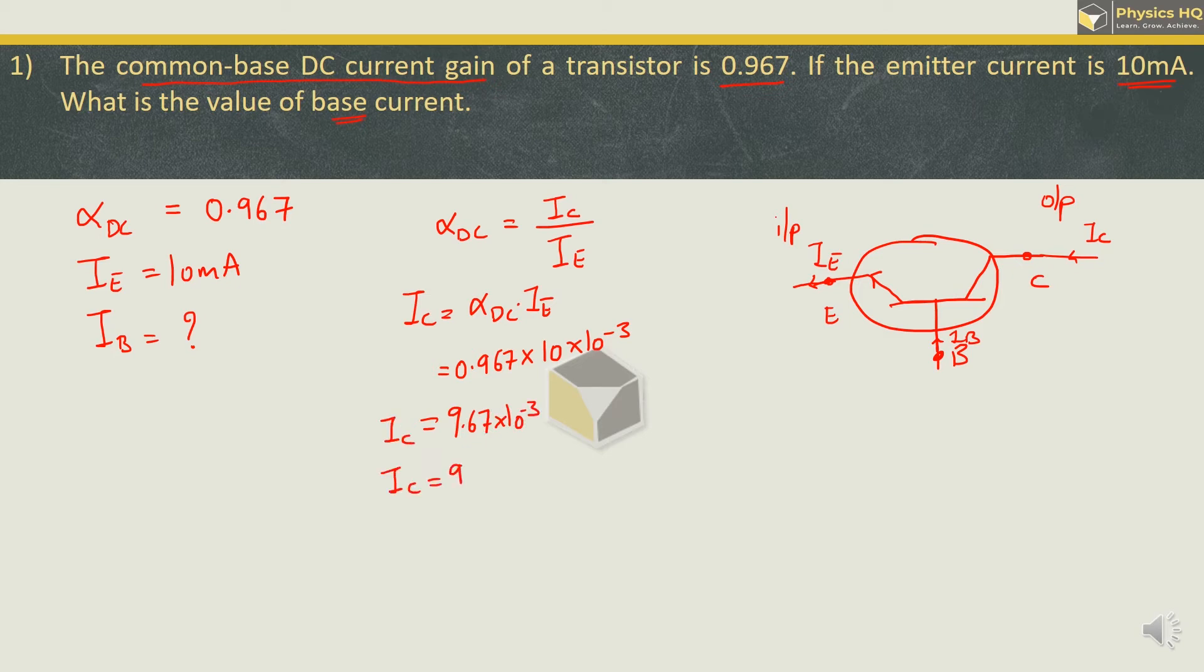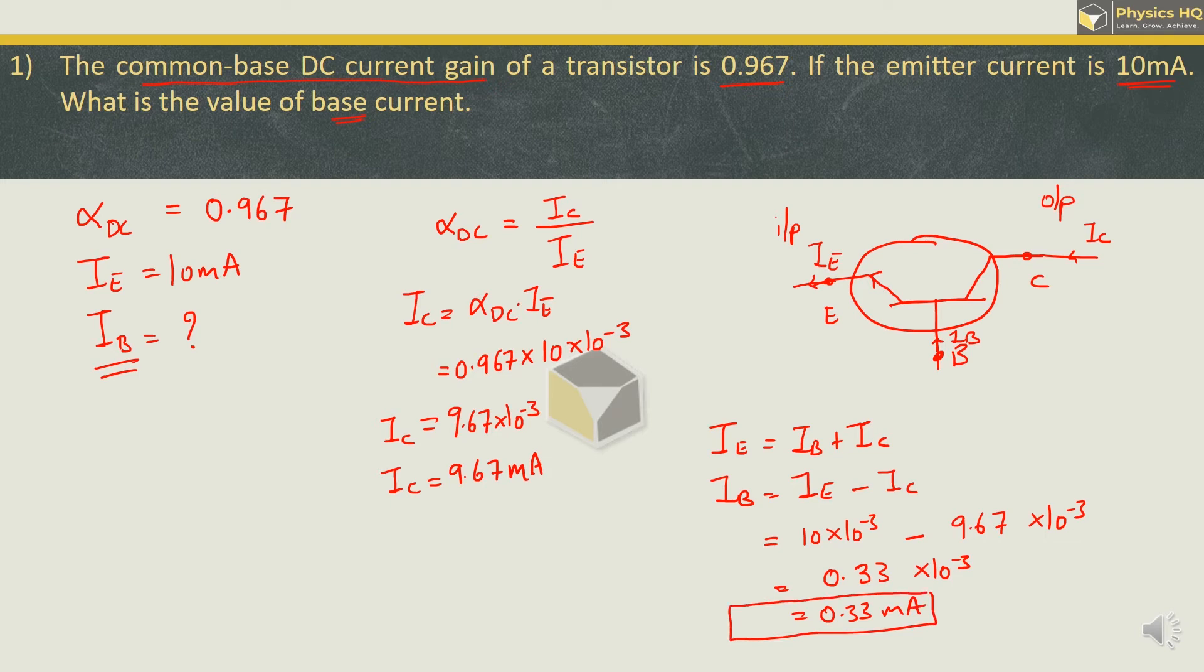This is the value of IC, which can be written as 9.67 mA. Finally, we are supposed to find the value of IB. We will use the standard equation IE equals IB plus IC. So IB equals IE minus IC, which is 10 minus 9.67, giving us 0.33 mA. So this is the value of IB.